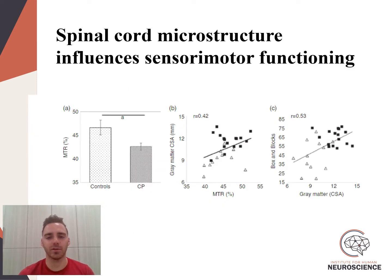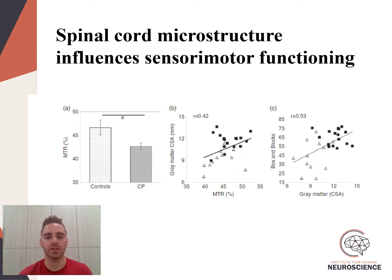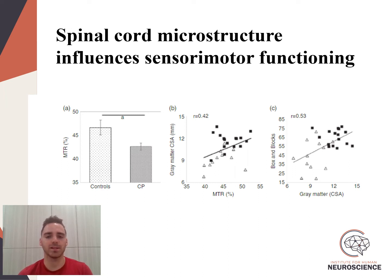While we didn't find any differences in the DWI outcome measures, we did find that the magnetization transfer ratio was significantly reduced in the adults with cerebral palsy in comparison to the healthy adult controls. On top of this, the individuals that had more gray matter within their spinal cords also tended to have higher magnetization transfer ratios.